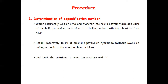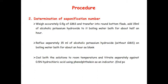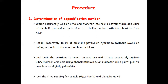Cool both solutions to room temperature and titrate separately against 0.5 normal hydrochloric acid using phenolphthalein as an indicator. The end point is pink to colorless or slightly yellowish. Let the titrate reading for the sample (GMS plus KOH) be V1 and the blank (only alcoholic KOH) be V2.